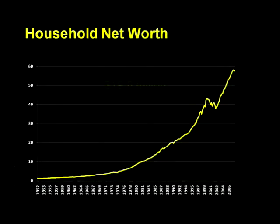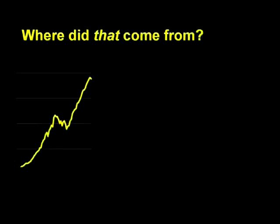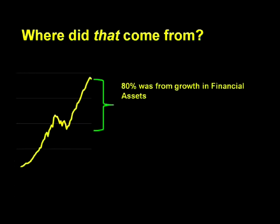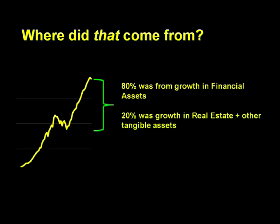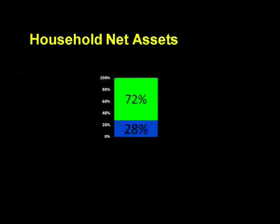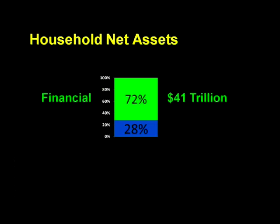Okay, where did that $19.8 trillion in new wealth come from? Well, about 80% of that growth came from a rise in financial assets, and the remaining 20% came from growth in real estate and other tangible assets. When we look at how much of each type there was, we see that 72% of the total net worth consists of financial assets, totaling about $41 trillion, while the tangible assets are the remaining 28% and total around $16 trillion.